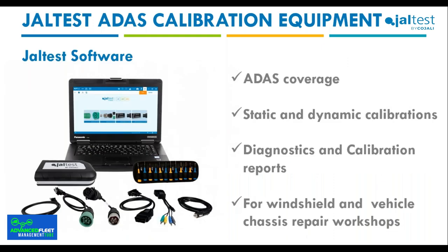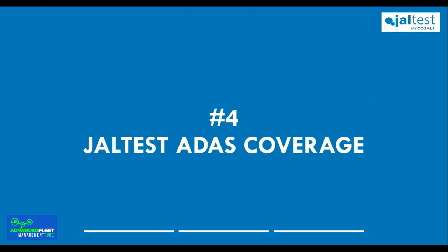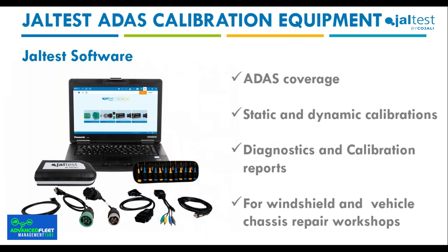The JALTES software provides all the necessary information for ADAS calibration in an easy and effective way for each truck manufacturer. First, it helps the technician with auto-detection of the vehicle. Then it provides step-by-step guides for calibrations as well as detailed instructions for preparing the ADAS calibration equipment. Another key feature is the capability to generate a diagnostic or calibration report — very important for repair shops to verify and document the health status of the vehicle both when it arrives and when it returns to the road.